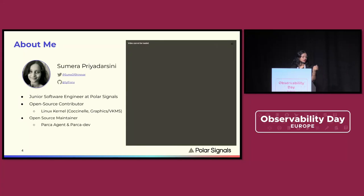So this is basically what my talk is going to be about: how do we go from taking a program to reaching this point and getting this kind of data? I am Sumera. My day job is staring at those icicle graphs I just showed you. In the process, we discover very cool compiler things and very weird kernel-adjacent low-level bugs. I'm also a PARCA agent maintainer. PARCA is the open source software I'll be talking about, and I work as a junior software engineer at Polar Signals — we do profiling and observability in general.